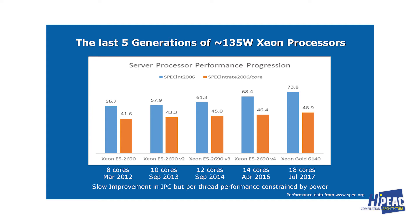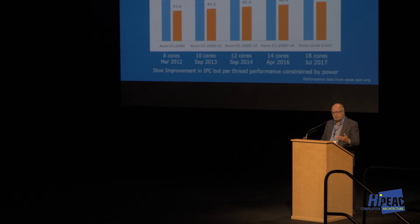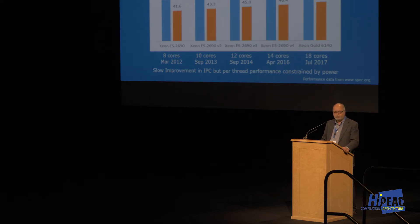Because we were power-constrained, the per-core performance did not go up that much. When you're power-constrained, the per-core performance stays flat and single-core is only slightly higher — but you're not going to use an eight-core server processor and run just one thread.